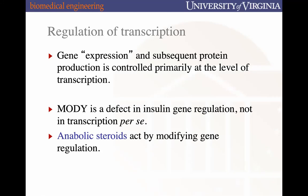When we talk about gene expression, we're typically describing the transcription of a specific gene as well as the subsequent protein production, and a lot of that control happens primarily at the transcriptional level. When we talked about MODY, one of the forms of type 2 diabetes, it's transcriptionally defective with respect to insulin — not because the machinery of transcription is defective, but because the regulatory mechanisms that control transcription are defective.